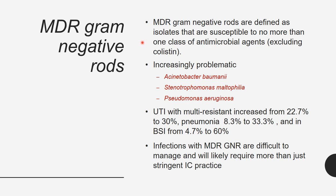MDR stands for multi-drug resistant gram-negative rods, defined as isolates susceptible to more than one class of antimicrobial agent, excluding colistin. Problematic organisms include Acinetobacter baumannii, Stenotrophomonas maltophilia, and Pseudomonas aeruginosa. MDR UTI has increased from 22.7% to 30%, pneumonia from 8.3% to 33.3%, and bloodstream infections from 4.7% to 60%. Infections with MDR gram-negative rods are difficult to manage.